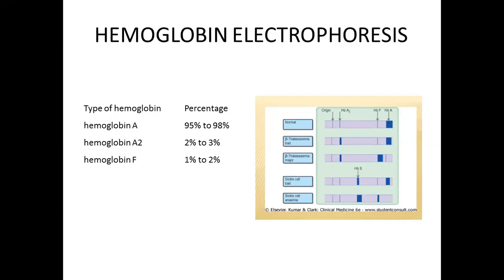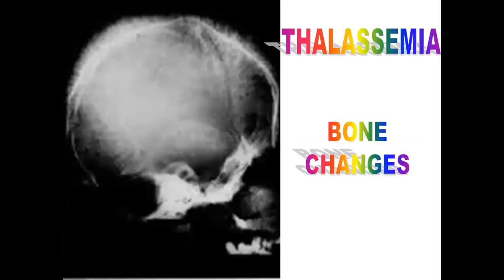Hemoglobin electrophoresis normally shows Hemoglobin A at 95–98% and Hemoglobin A2 at 1–2%. But in beta thalassemia, Hemoglobin A percentage is decreased, Hemoglobin A2 is increased, and Hemoglobin F level will be more than 2% — it can be 10, 20, or 30% depending on the severity of disease. Hemoglobin A will be less than 95% and Hemoglobin F more than 2%, confirming beta thalassemia.